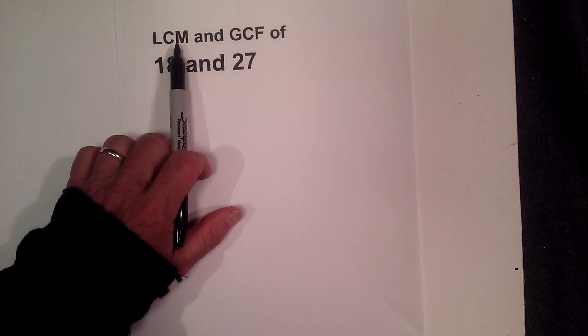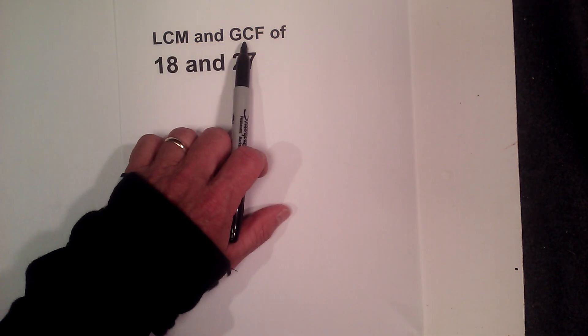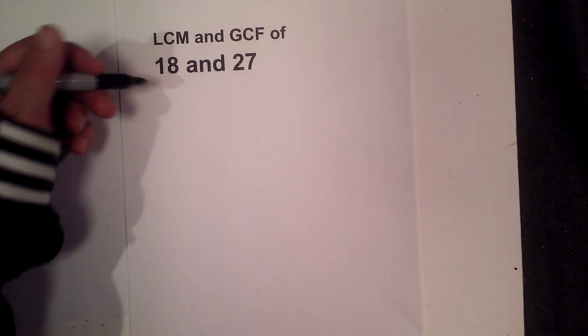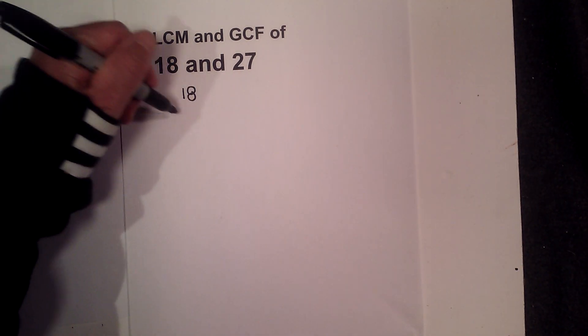In this video, let's find the LCM, Least Common Multiple, and the Greatest Common Factor of 18 and 27. And I like to use a factor tree. So let's get started.